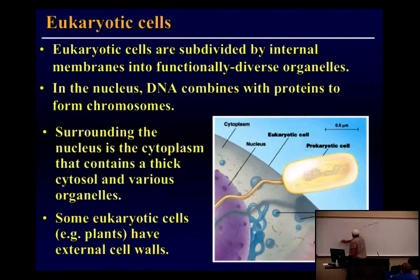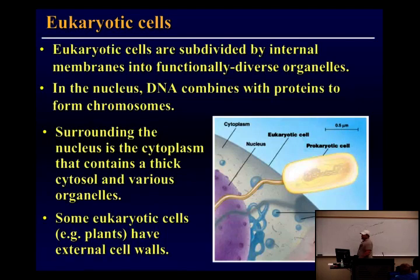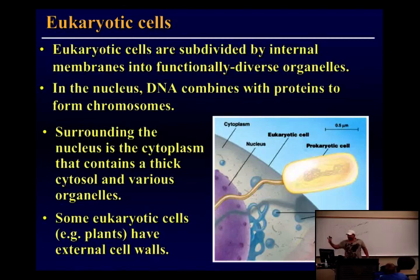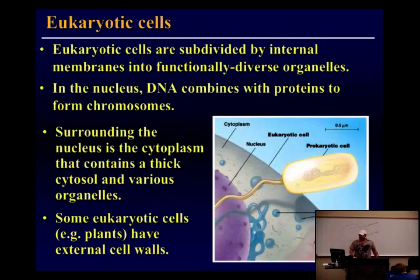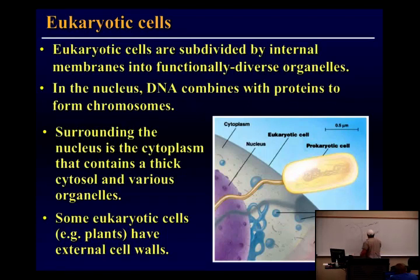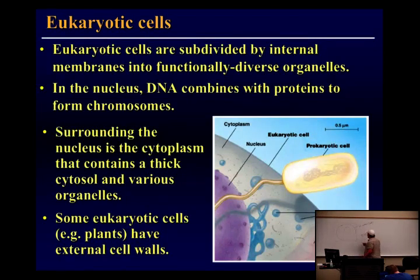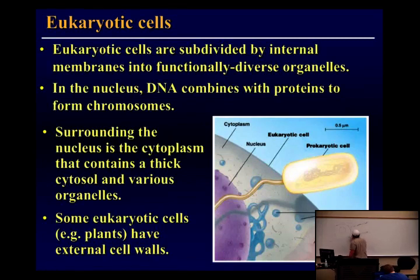Some organisms have a cell wall, which is made out of cellulose — what you call fiber on your nutritional label, like on the back of a box of cereal. It's non-digestible. All bacteria have a cell wall — all prokaryotes have a cell wall. Some eukaryotes have a cell wall, like plants do, and some fungi do, but we don't. You may or may not have a cell wall.